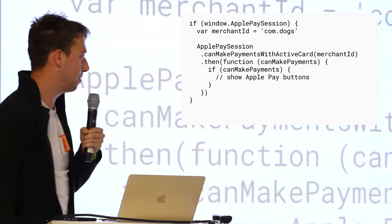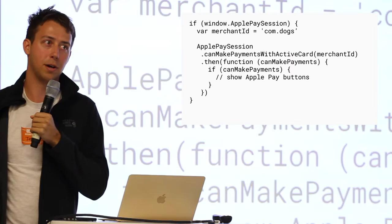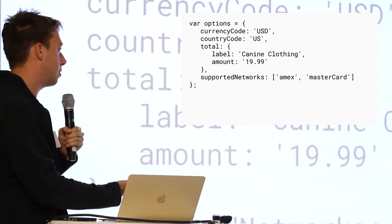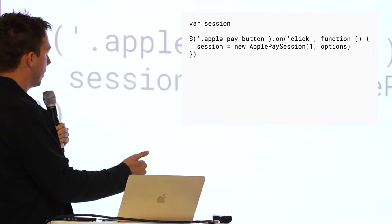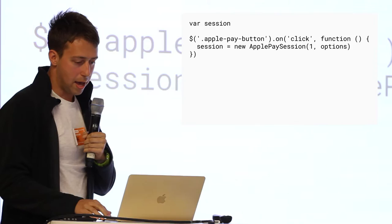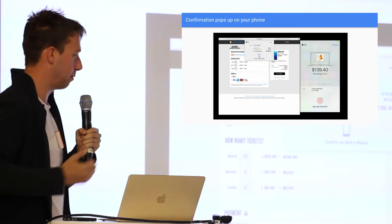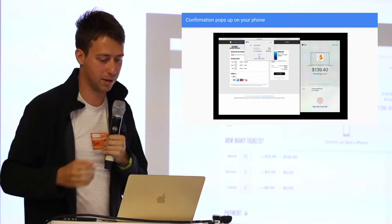Before you accept Apple Pay, you need to call the ApplePaySession canMakePaymentsWithActiveCard method. That checks whether the customer's device can accept Apple Pay and whether they have an active card to pay with. If it returns true, you show the Apple Pay buttons. You define one object with all the payment information — all the card networks you accept. When the customer clicks the button, you call a new ApplePaySession with your options, and that pops up the dialogue on desktop prompting you to authorize on your phone.